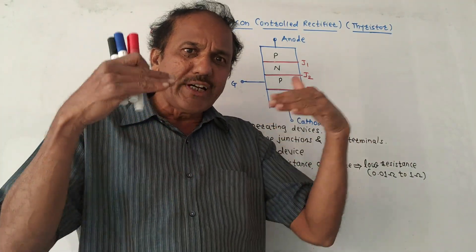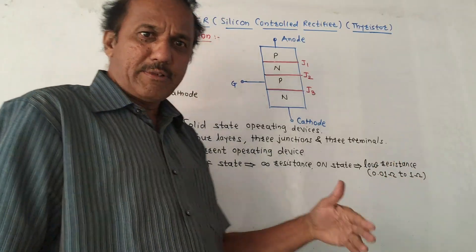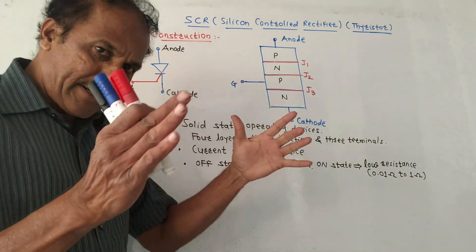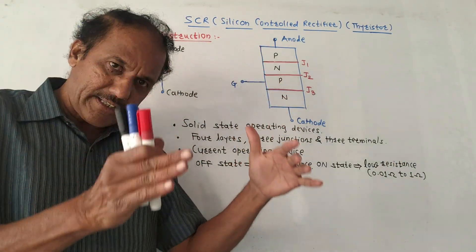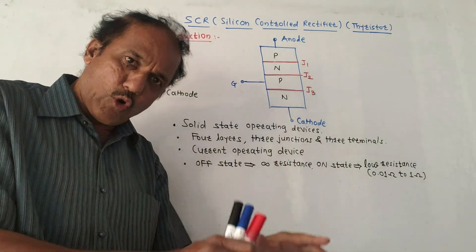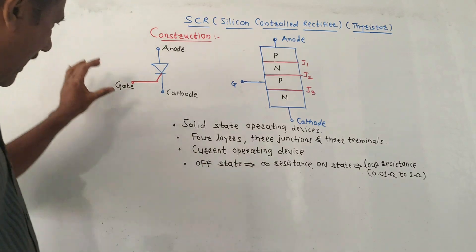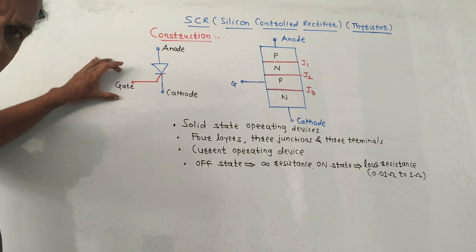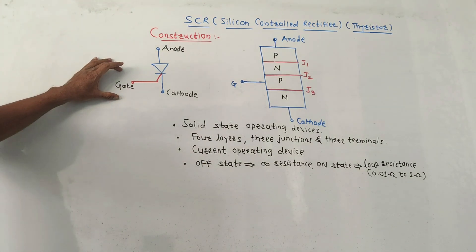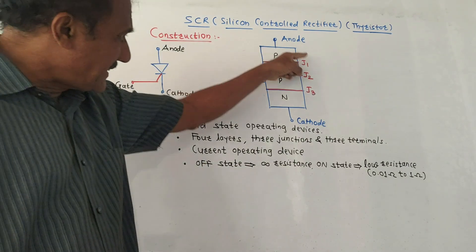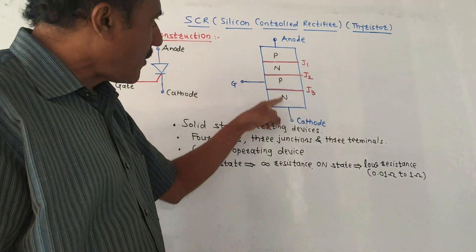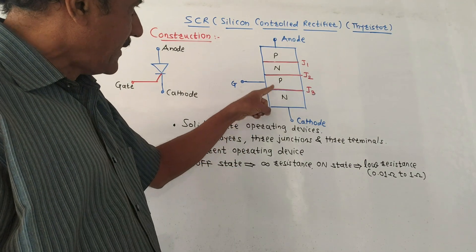Like the diode, the flow of current is unidirectional, that means from anode to cathode, and this current is controlled by applying a certain signal at the gate terminal. This diagram shows the construction of SCR.